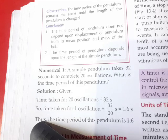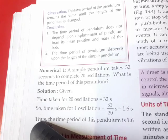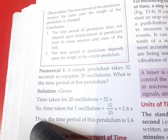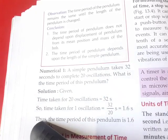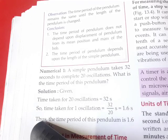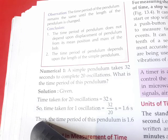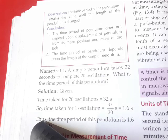The conclusion from this experiment: the time period of a pendulum does not depend upon the displacement from the mean position or the mass of the bob. Every time, the displacement gradually decreases and the bob tries to stop, but the time for each oscillation does not depend on the displacement or mass. The time period of a pendulum depends upon the length of the simple pendulum — if you increase the length and calculate 20 oscillations, you will notice a difference.